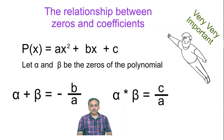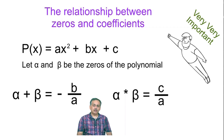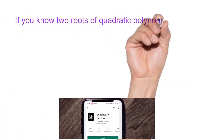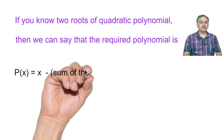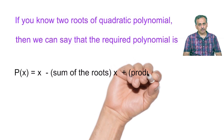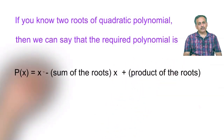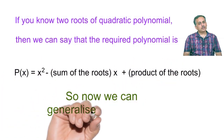You will definitely find problems related to this concept in your exam, so remember this formula very carefully. Alpha plus beta can also be called the sum of the roots, and alpha into beta can be called the product of the roots. So if two roots or zeros of a polynomial are given, find the sum of the zeros and product of the zeros. Then the required quadratic polynomial will be x square minus (sum of roots) into x plus (product of roots).